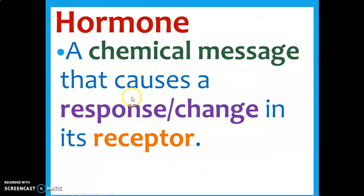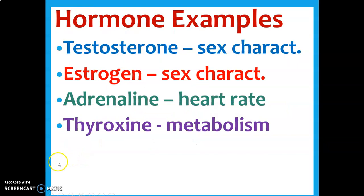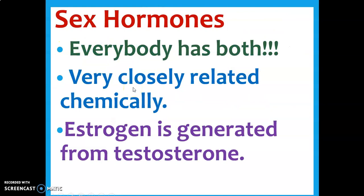A hormone is a chemical messenger that moves through the body. Instead of your nerves, which send signals basically with electricity and are really fast, your hormones are your slow messengers. But the change can be pretty pronounced — they can have a big effect on your body depending on whether the hormones are getting there or not enough hormones are getting there. Testosterone and estrogen — everybody has both of them, whether you're male or female, just in different levels. And estrogen is actually generated from testosterone.